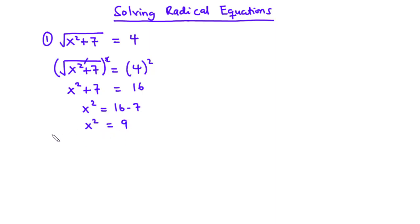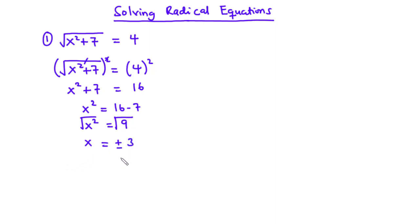To find x, we are going to take the square root of both sides. Then we have x equals plus or minus 3, so x is equal to 3 and x is equal to negative 3.